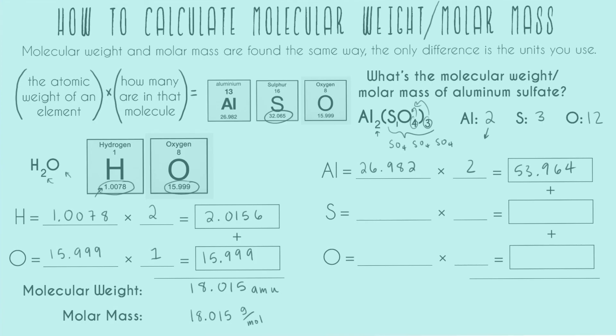Next, sulfur, 32.065. I have three of them. Multiplying together, I have 96.195. And last but not least, oxygen, 15.999. I have 12 of them. Multiplying together, I have 191.988.